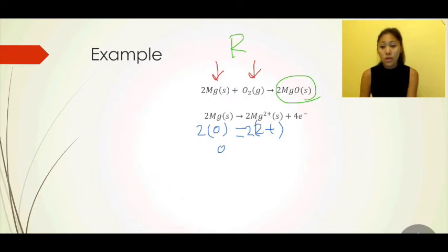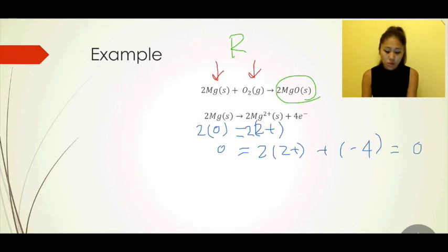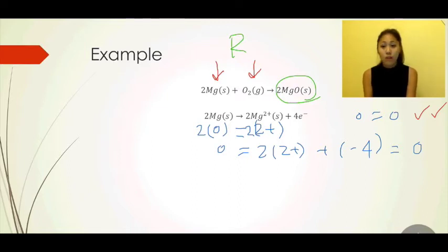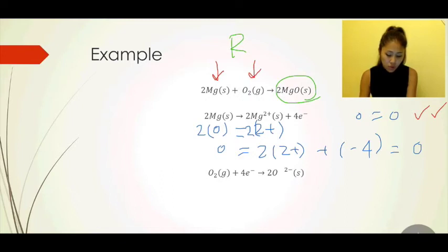Now let's move on to the next half equation: oxygen. Taking a look at oxygen and doing the same thing we did with magnesium — oxygen here is not an ion, so it holds an oxidation state of 0. On the right-hand side, oxygen as an ion usually holds an oxidation state of negative 2.